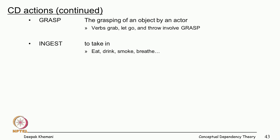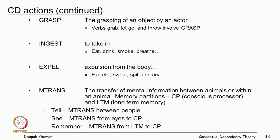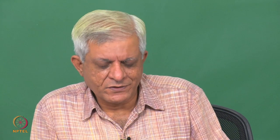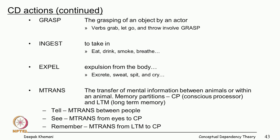INGEST covers all kinds of input to our system; EXPEL covers all kinds of output. MTRANS is mental transfer — the transfer of mental information between animals or within an animal itself. Memory is modeled as long-term memory, short-term memory, conscious processor, and immediate memory. Telling somebody is M-transing between people; seeing something is M-transing information from your eyes to your conscious processor; remembering is M-transing from long-term memory to the conscious processor.